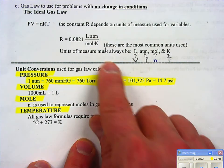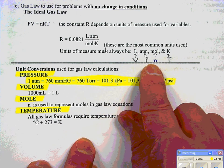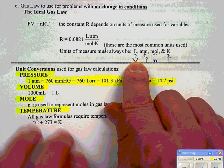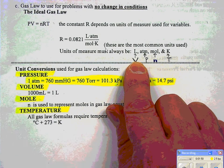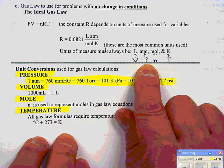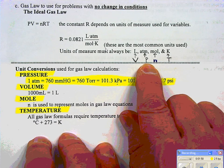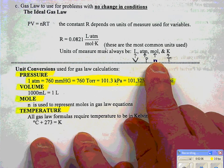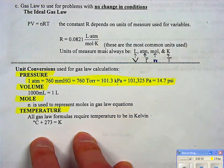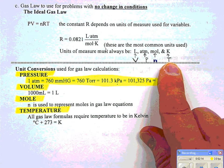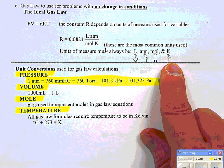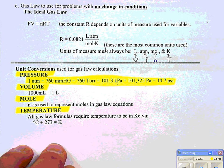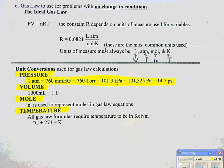The units of measure must always be: volume in liters, pressure in atmospheres, n in moles, and T in Kelvin. So if we're given milliliters instead of liters, we have to convert before we can run this calculation. Same with pressure — if we're given 25 torr and not atmospheres, we've got to convert torr to atmospheres. If we're given grams instead of moles, we'd have to convert grams to moles. You'll see all of that happen in the second example. If given centigrade, convert to Kelvin by adding 273. Down here you'll see how to convert from any unit of pressure to any other.